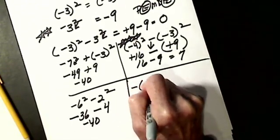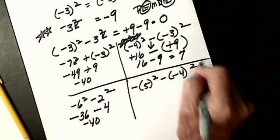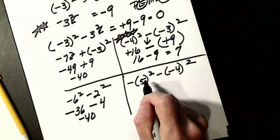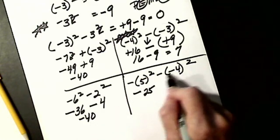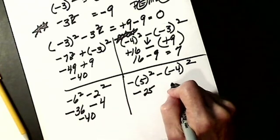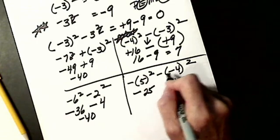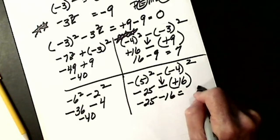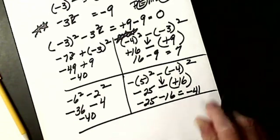Negative 5 squared minus negative negative 4 squared. Negative is not inside, so I just square the 5: positive 25. Negative stays. Can't change this to a plus yet because exponents come first: I get positive 16 from that term, copy it down. Can't have two signs touching — put in a parenthesis. Now I have negative 25 minus negative 16: negative says change that, signs are alike, add and take the same sign: negative 41.